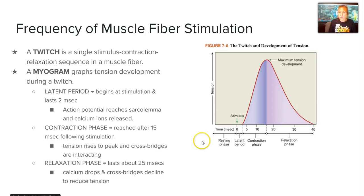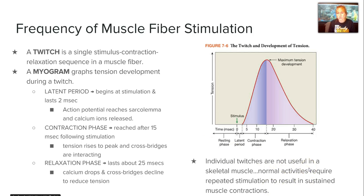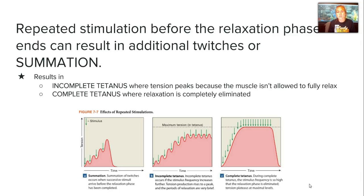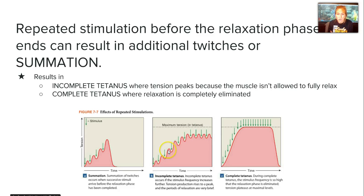These are very short time frames — this all happens very quickly. Individual twitches are not useful in a skeletal muscle; normal activities actually require repeated stimulations to result in sustained muscle contractions. Repeated stimulation before the relaxation phase ends can result in additional twitches, something we call summation. Summation will result in either incomplete tetanus, where tension peaks because the muscle isn't allowed to fully relax — as shown by the green arrow indicating quick stimuli with peaks but relaxation never completely eliminated — or complete tetanus, where there are no drops in relaxation and continued stimulus causes tension to keep rising.